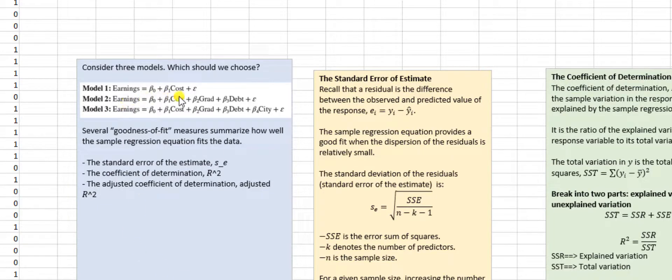So model 1 uses only cost as a predictor variable. Model 2, we have cost, grad, and debt to predict earnings. In model 3, we have all four predictor variables: cost, grad, debt, and city.